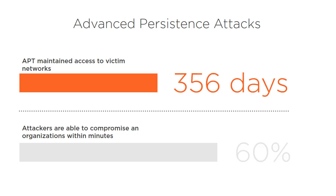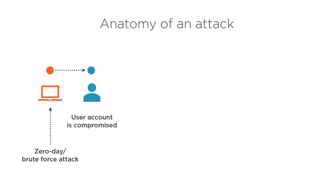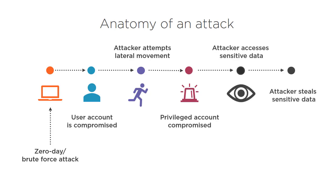So if we know how attacks are happening and the techniques attackers use to carry out their attacks, then we might learn the signals to look for when detecting attacks. It all starts with a zero-day or brute-force attack on a machine inside your network, and the user account for that machine is compromised. The attacker then tries to learn about the resources in the network, and will do lateral movement using different techniques like pass-the-hash or pass-the-ticket until a privileged account is compromised to access or steal sensitive information or even bring the whole network down. Now that we know how attacks work, we can clearly see the anatomy of such an attack.